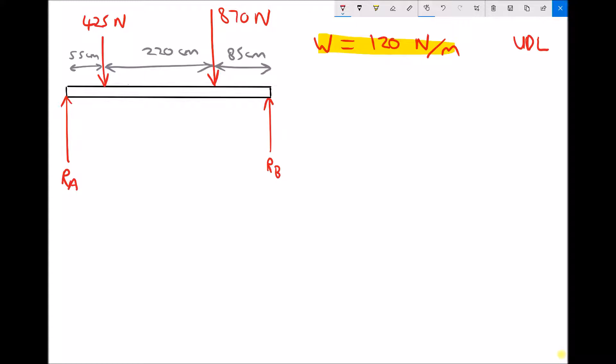The first thing we need to do is calculate the overall length of this beam. So the length of the beam in this case is 55 centimeters. Well, 55 centimeters is 0.55 meters. Remember that we always work in our standard international units. We've then got 220 centimeters, which is 2.20 meters, and then we've got an additional 85 centimeters, which is 0.85 meters. Therefore, the total length of the beam is 3.6 meters.